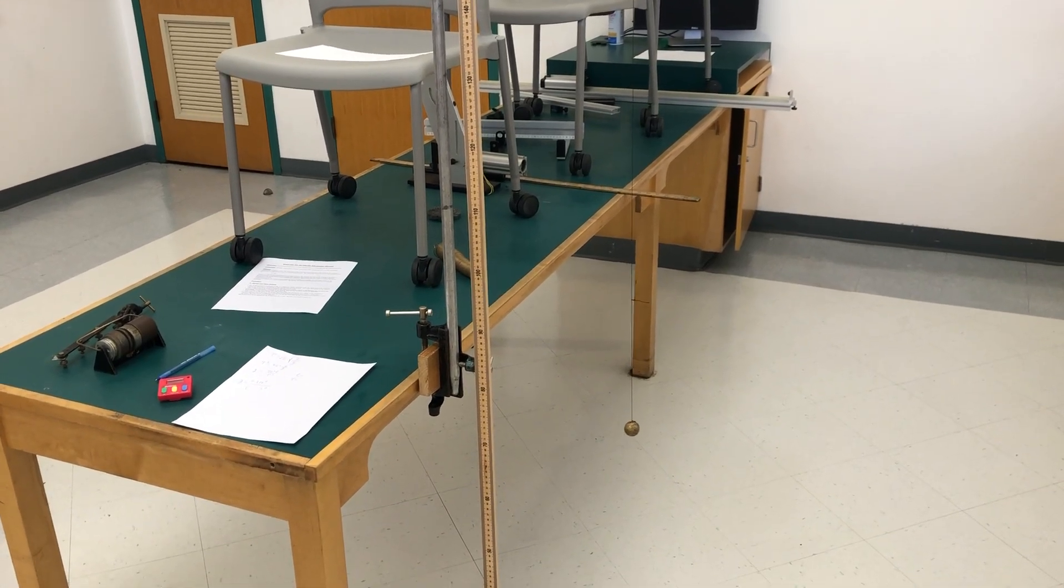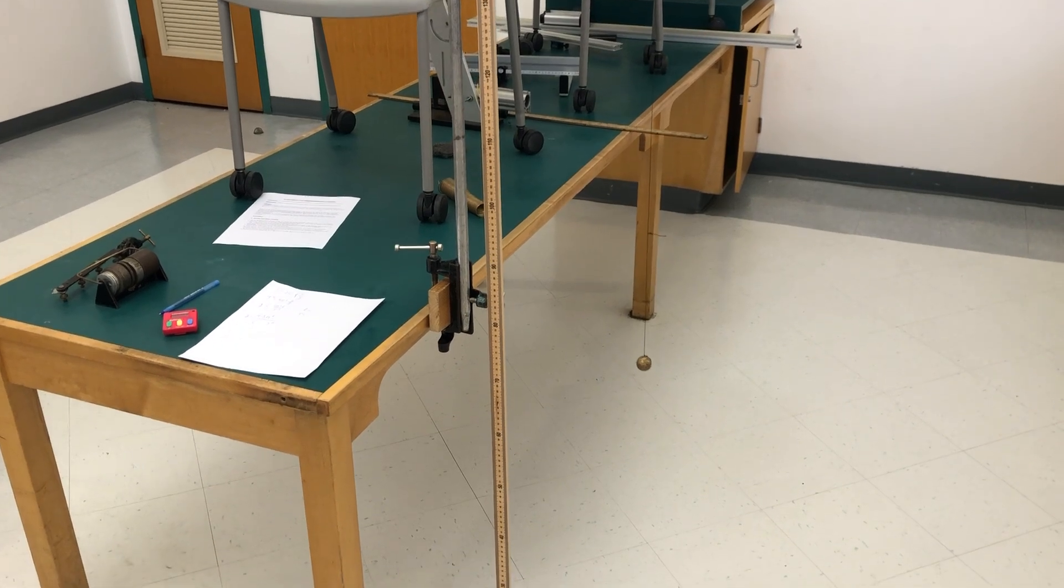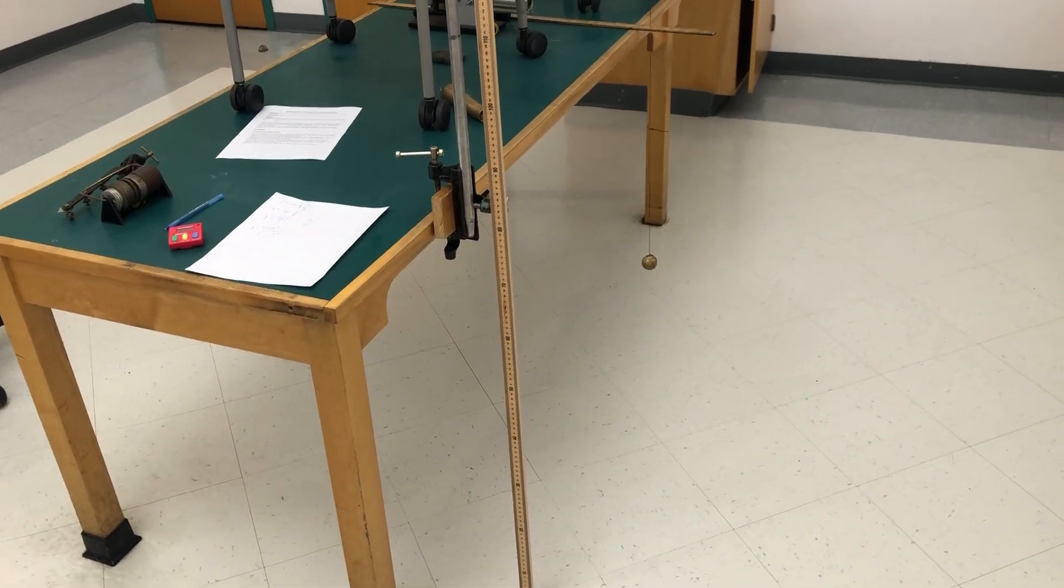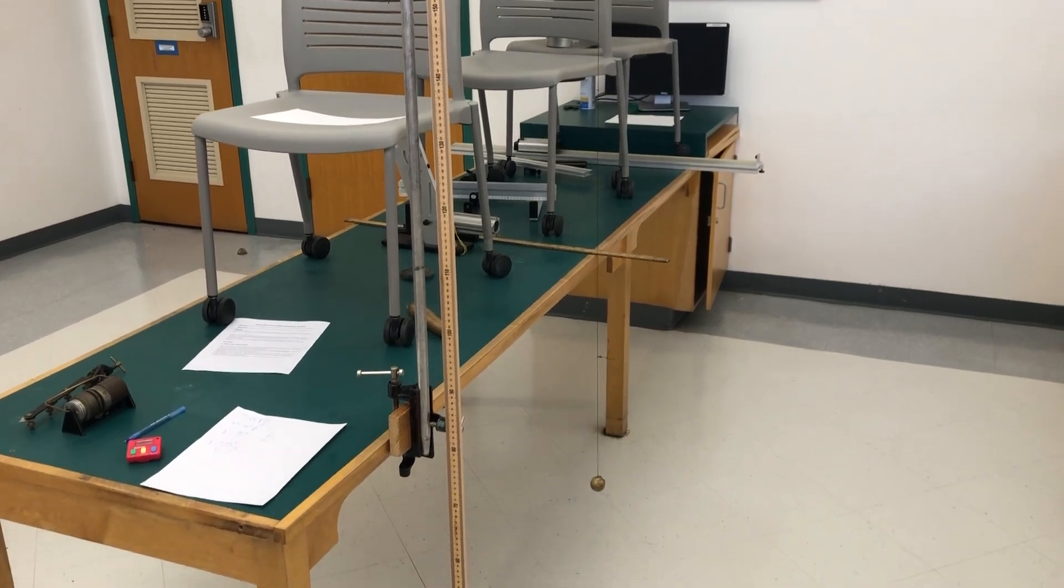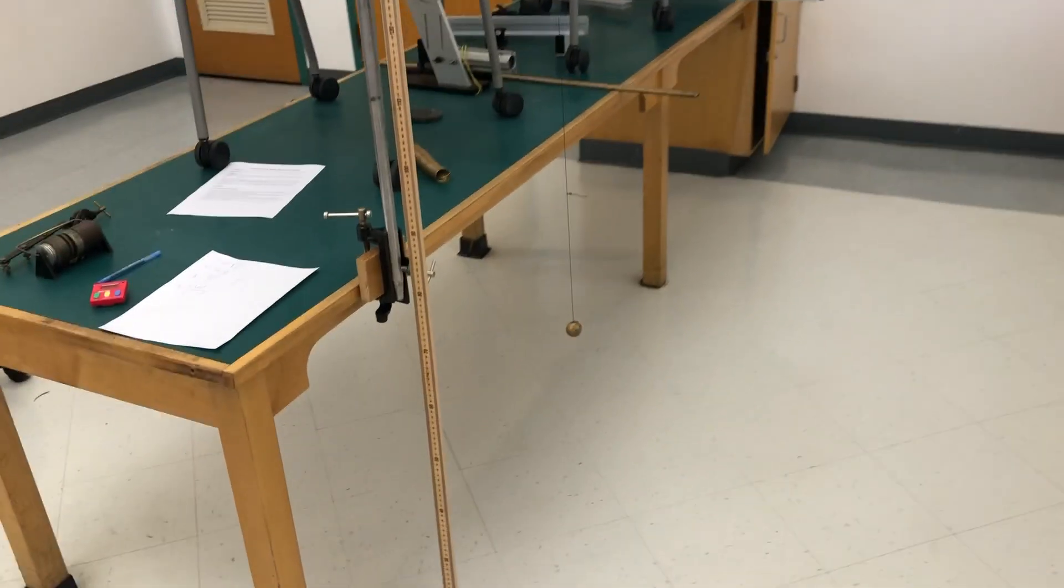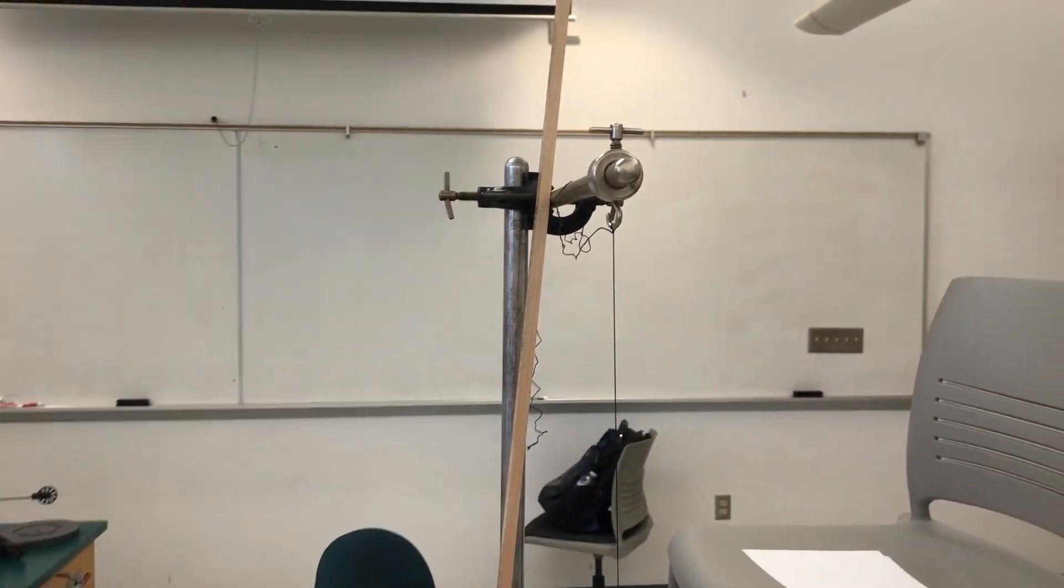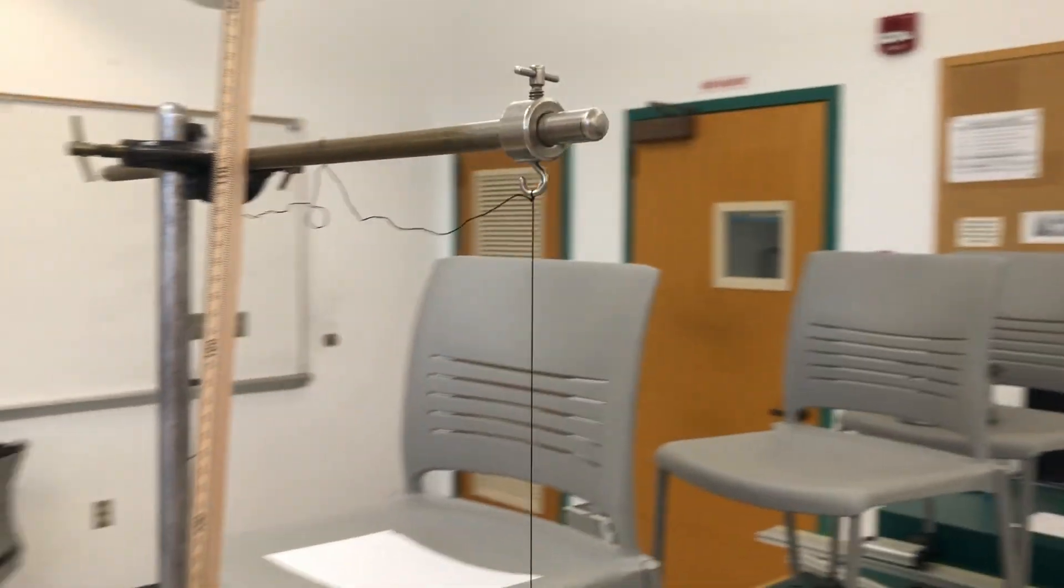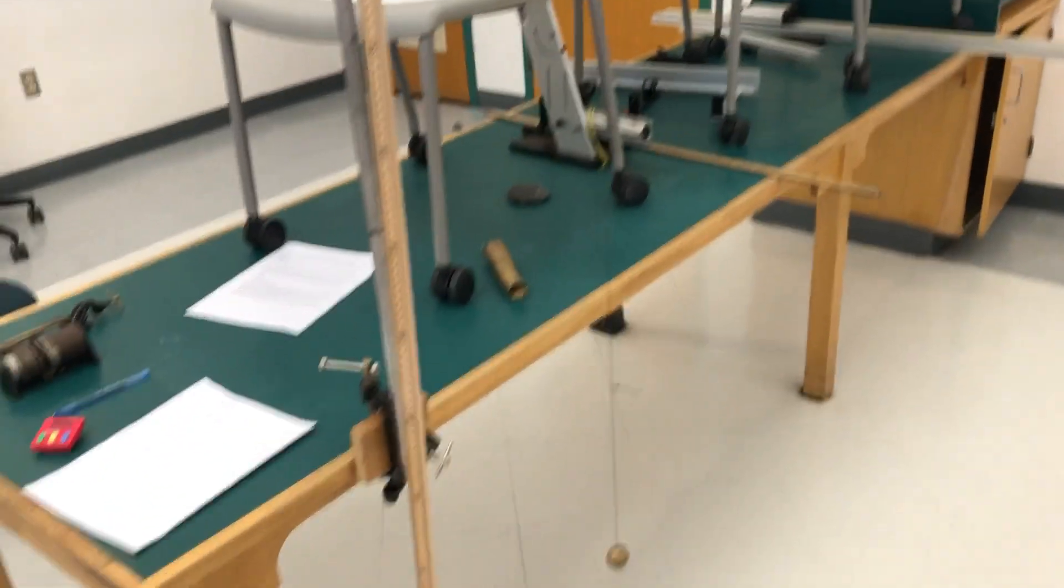Okay, so we have the pendulum part of the simple harmonic motion lab. We replaced the spring with a simple pendulum. There's a mass that is hanging on a string. The string is attached to a holder and this time we will test the formula and see if it really works.